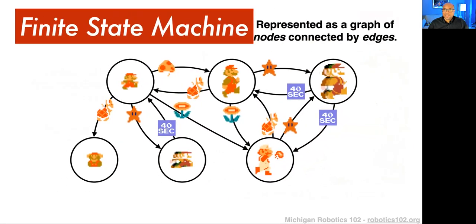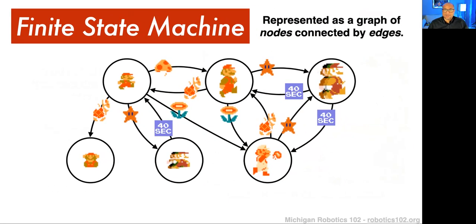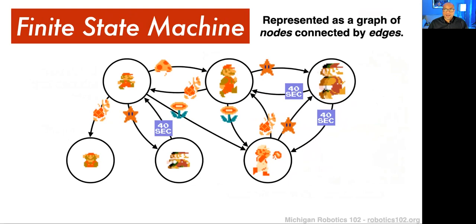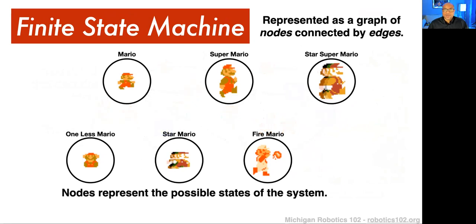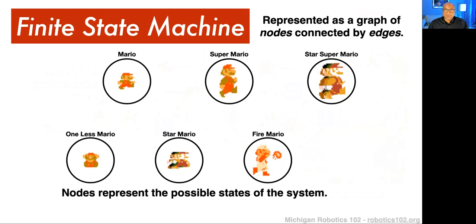Let's break this down further. Our state machine is represented as a graph with nodes and edges. What is a node? Each of these circles represents a node. You can think of a node as some sort of state or entity where we can ascribe certain information to it. There might be a name associated with it — each of these states has a name.